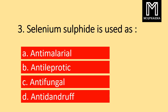Question number 3. Selenium sulphate is used as: Option A Antimalarial, Option B Antilaparotic, Option C Antifungal, Option D Antidandruff. Correct answer: Option D Antidandruff.